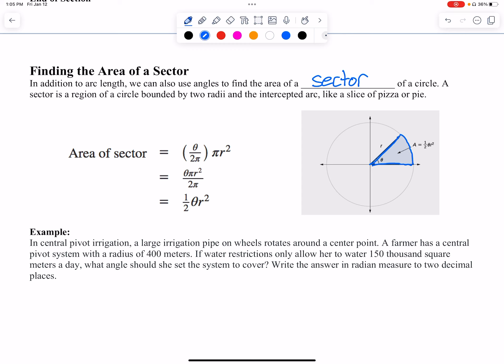So how we can come up with this is if I think about the area of the circle. The area of a circle, if you forgot, is πr². What is happening here is that we're taking a portion of our circle.